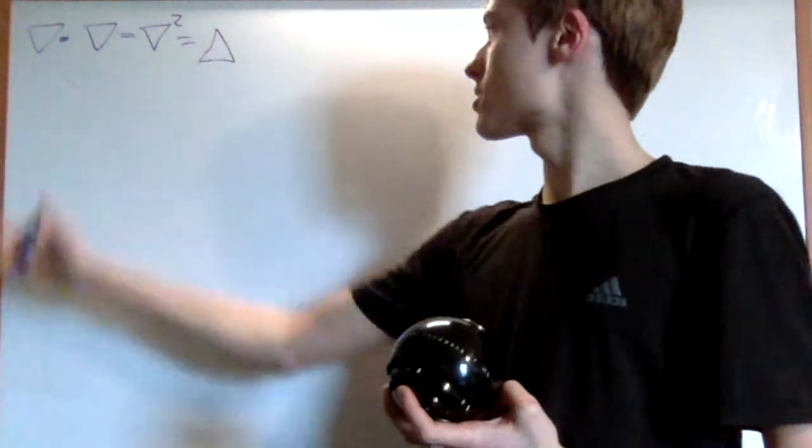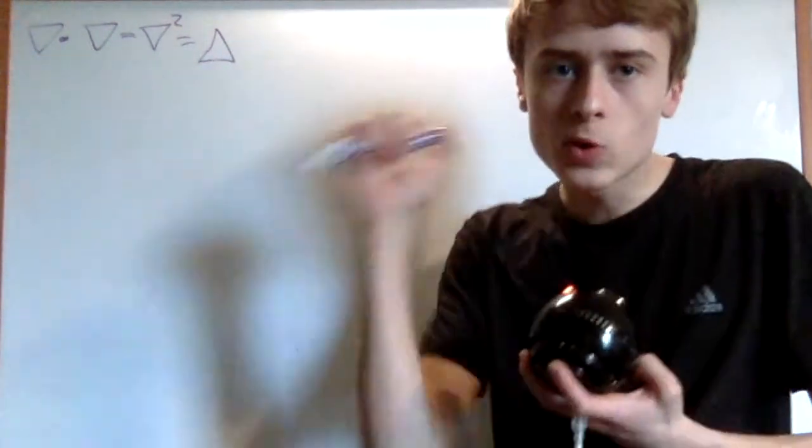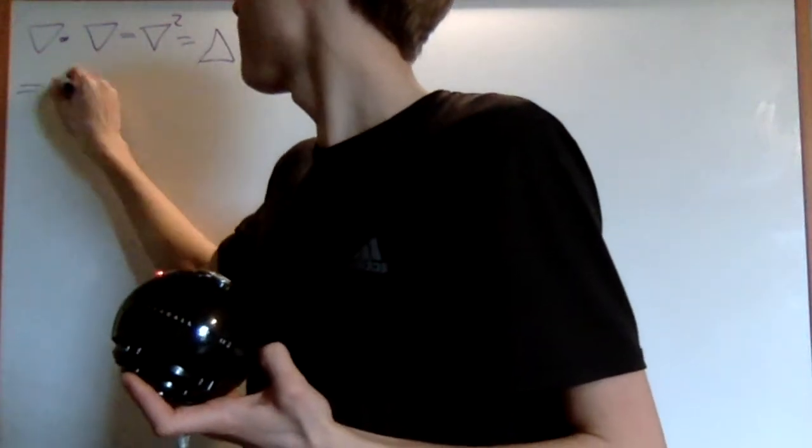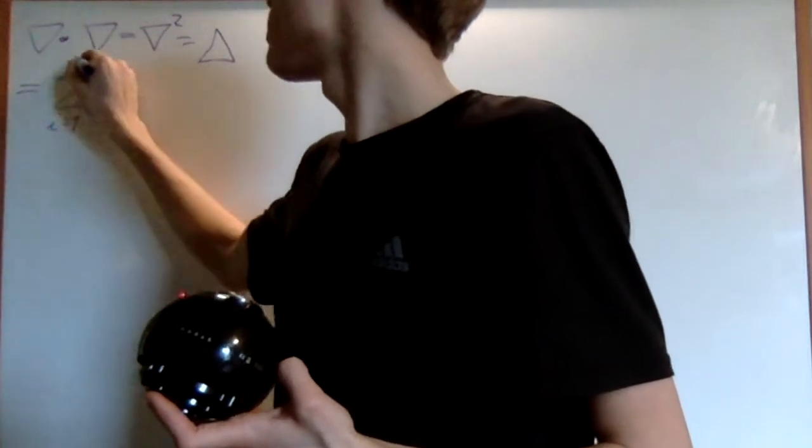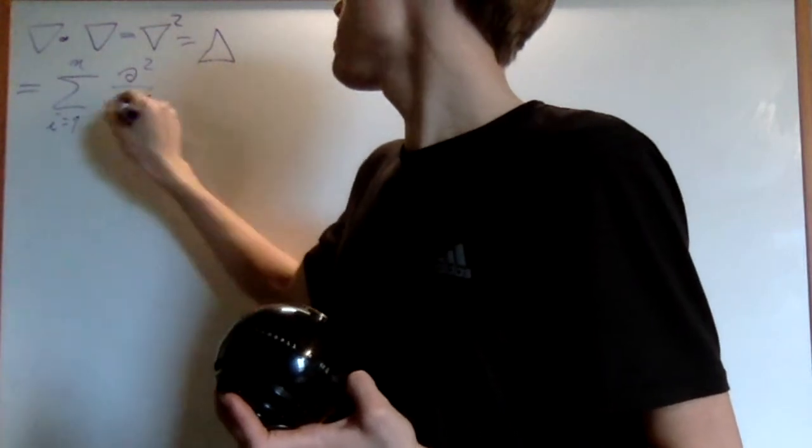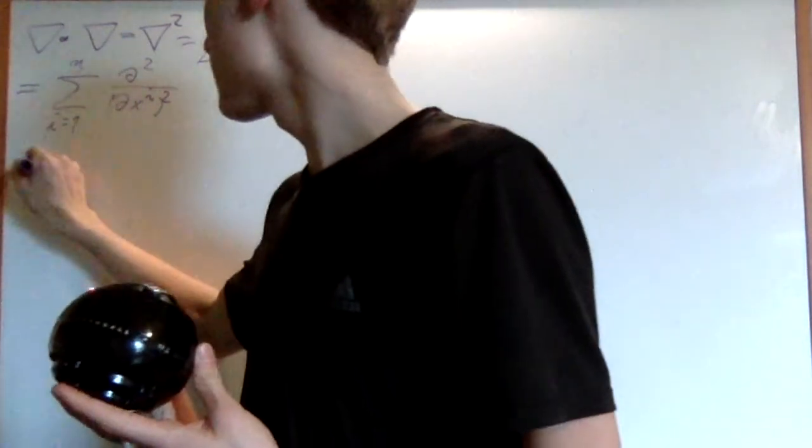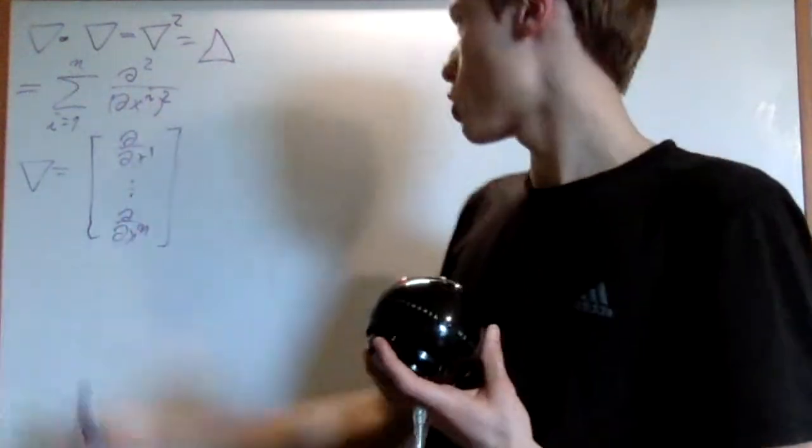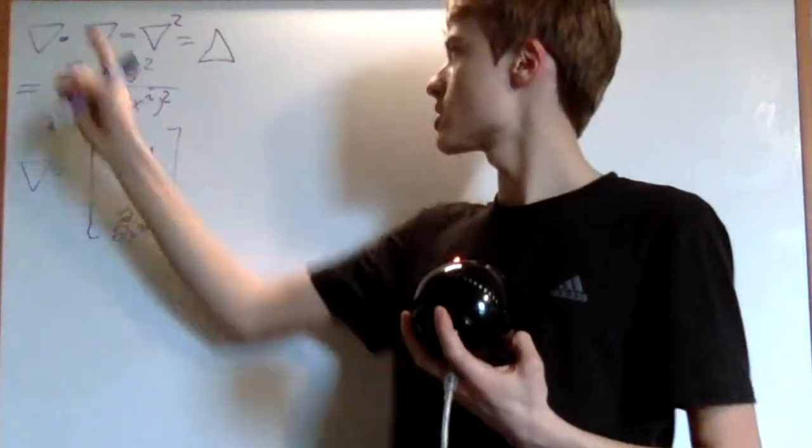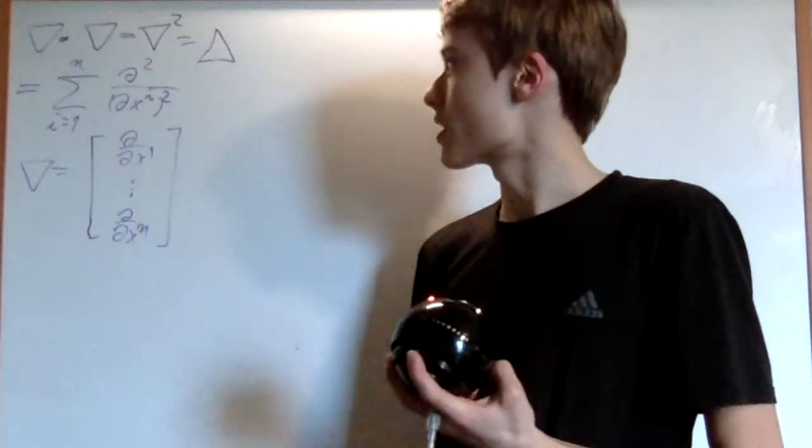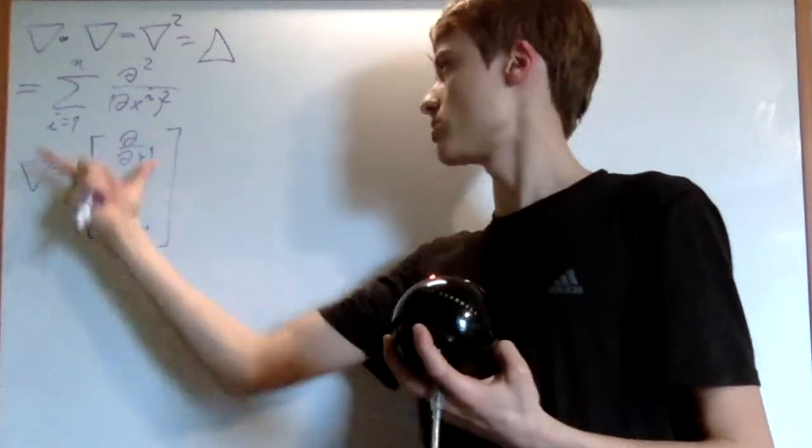And what it is, is precisely just this first one. It's the gradient dotted with itself. So it's the sum from i equals 1 until n of all the partial derivatives squared. If you don't know, the gradient here is the vector of all partial derivatives. So the Laplacian is this dotted with itself - all the partial derivatives squared summed up together.